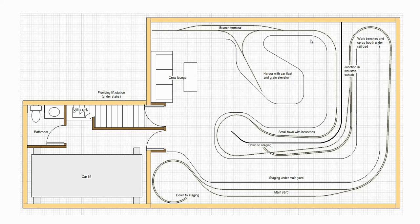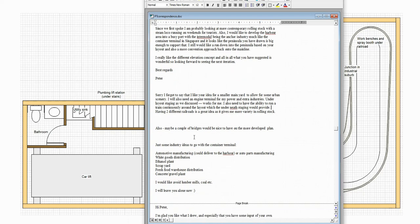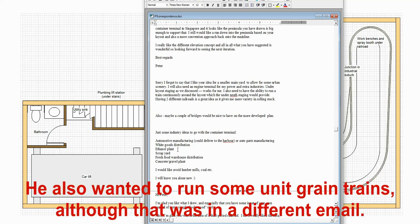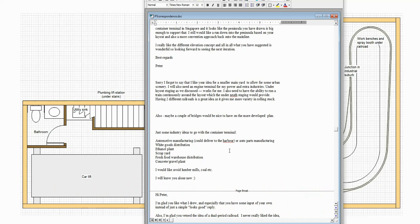But this was the point at which he decided to abandon the dual periods. He now wanted to go completely up-to-date. He decided he wanted me to develop the harbour as a contemporary container port, and would just run the occasional steam locomotive on a weekend excursion on an otherwise completely up-to-date layout. He also came up with a list of additional industries: in addition to the container terminal he suggested automotive manufacturing delivering to the harbour, white goods distribution — which is Australian for kitchen appliances — an ethanol plant, scrap yard, fresh food, warehouse distribution, and a concrete gravel plant. He also said he wanted to avoid lumber mills and coal mines, which are kind of clichéd on model railroads anyway.